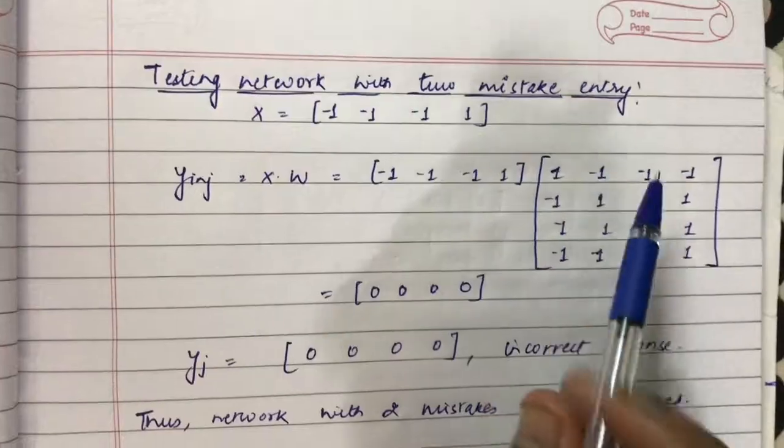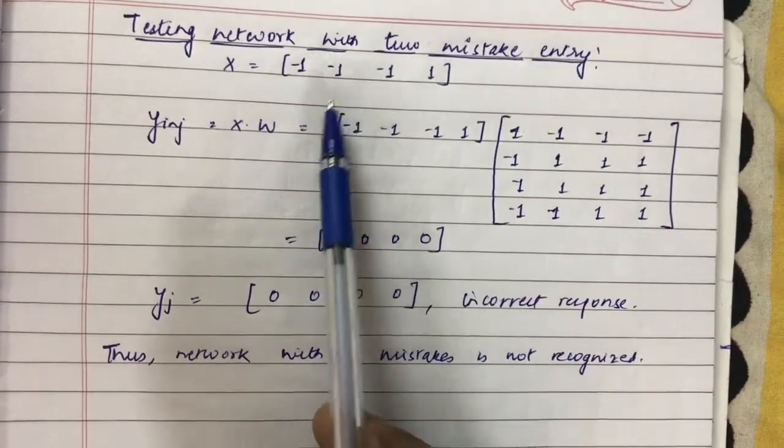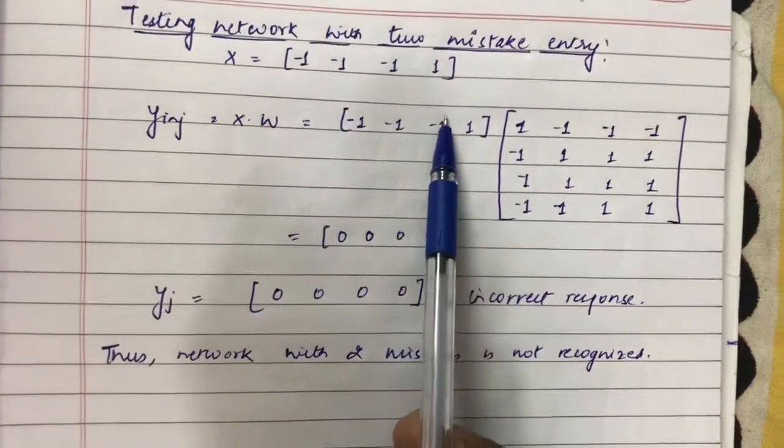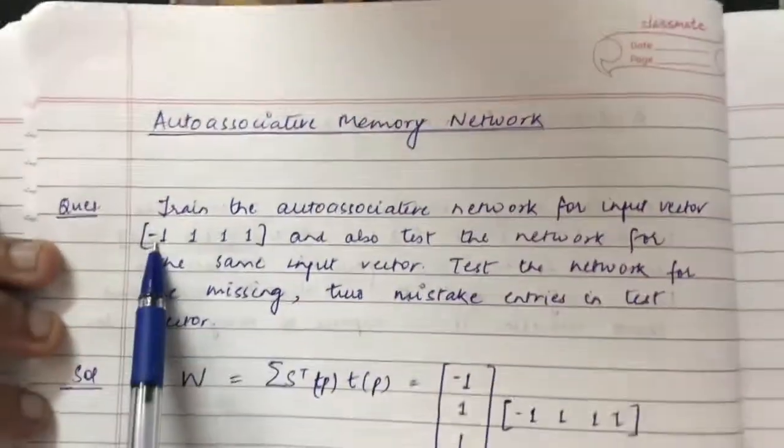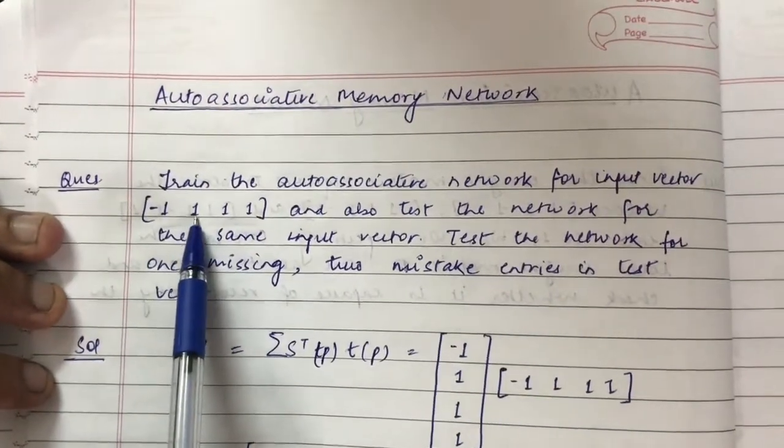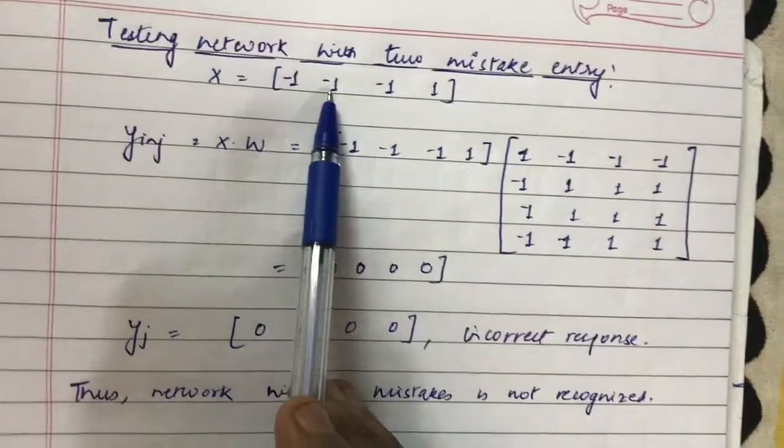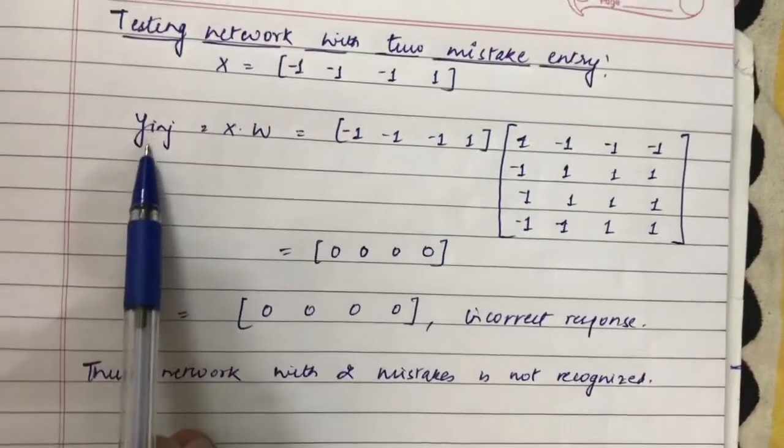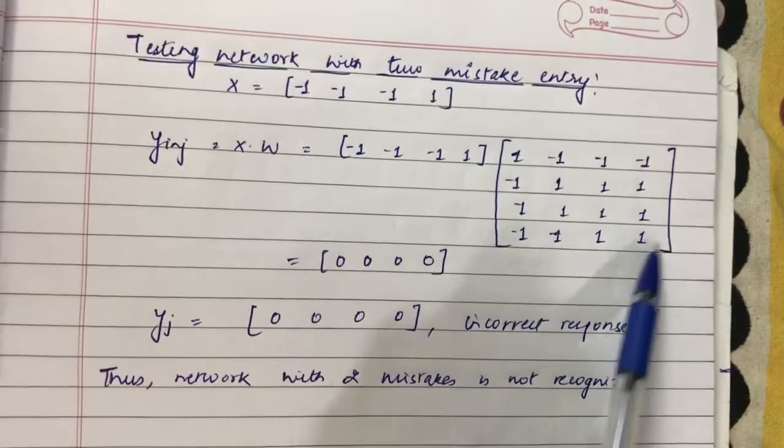Now, testing the network with two mistaken entries. What is a mistaken entry? Replacing a 1 value with minus 1, or a minus 1 value with 1. Here we have two mistaken entries in the test vector [-1, -1, -1, 1].